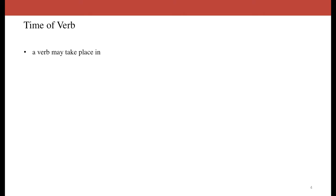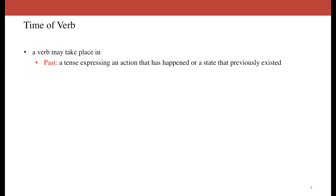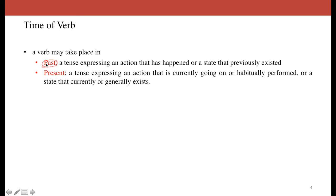Let us justify what exactly we mean by the time of the verb. Something that happened a while ago is already complete and the time frame is shifted to the past — something that is already done, the state that had previously existed — such a tense is always stated in the past form. Another way would be when the time we are talking and the time of happening of the event is the same — as in, the things have happened, are happening, or the state is held or habitually performed. Such a tense, since it is being talked about right now, becomes the present tense.